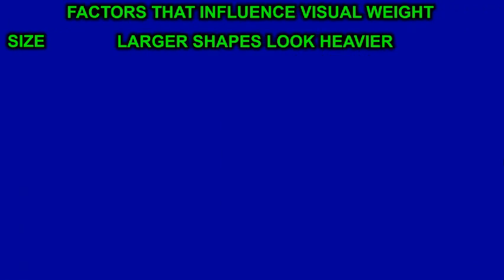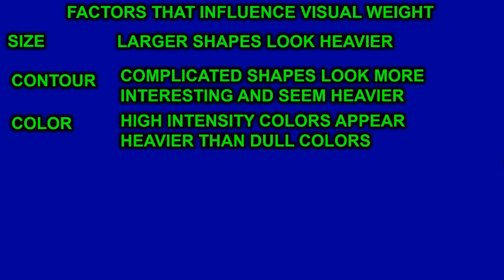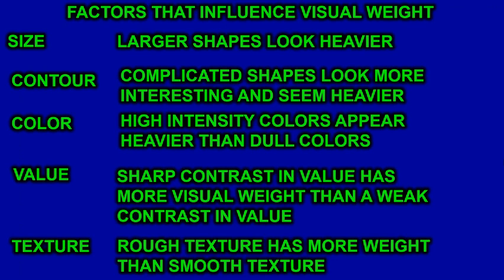There are several factors that influence visual weight. Size: larger shapes look heavier — like a pint of milk versus a gallon, the larger portion is heavier, and even in photographs larger objects appear heavier. Contours: complicated shapes look more interesting and seem heavier than simple shapes. Colors: bright or high-intensity colors appear heavier than dull colors. Values: sharp contrast in value has more visual weight than weak contrast. And texture: rough texture has more weight than smooth texture. That's how we can balance things out even when elements are different sizes.